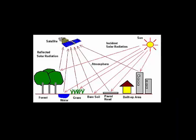Optical remote sensing is a passive form of remote sensing, so the sensor that records the information does not emit the radiation itself. Typically, the source of radiation for passive remote sensing is the Sun. This emits an enormous amount of radiation, and it travels to the target surface from the Sun, where it's reflected back to a sensor, which records the reflected radiation as information.